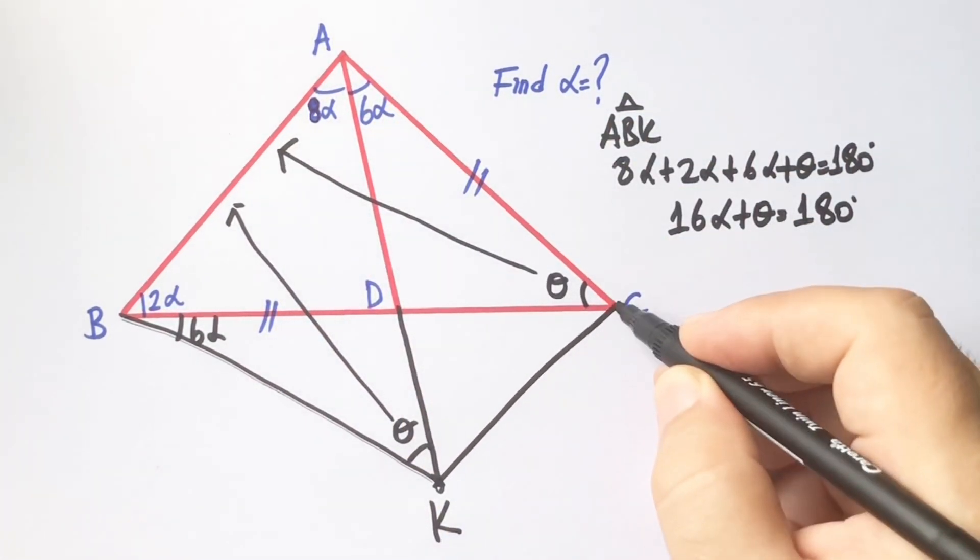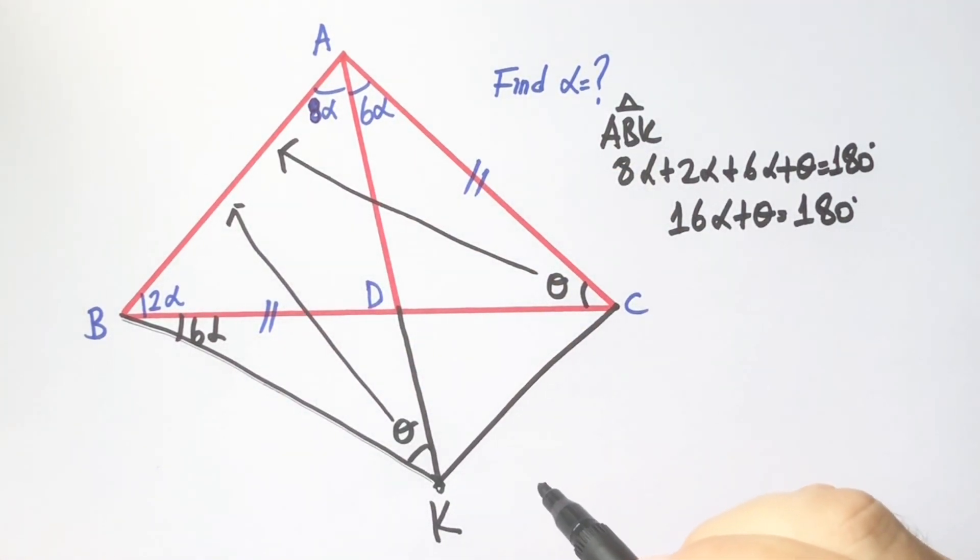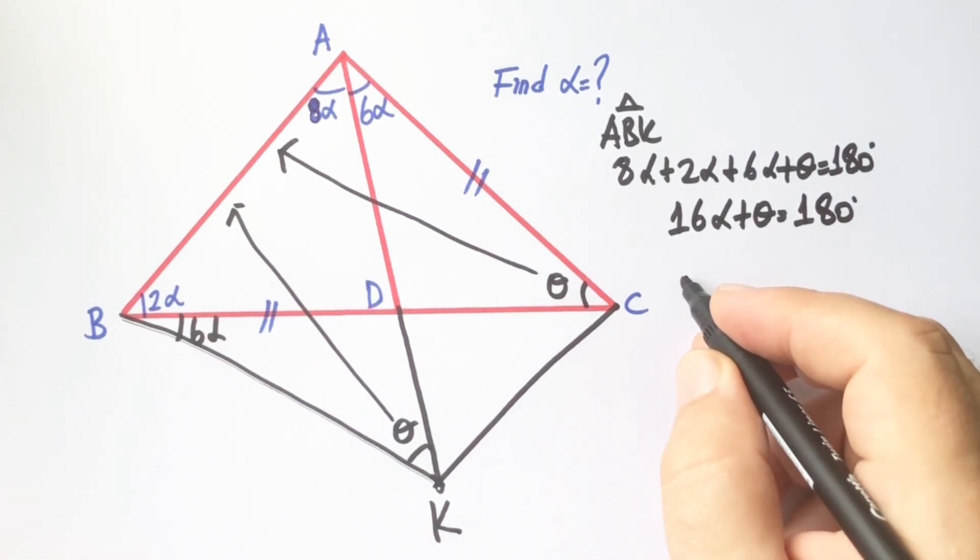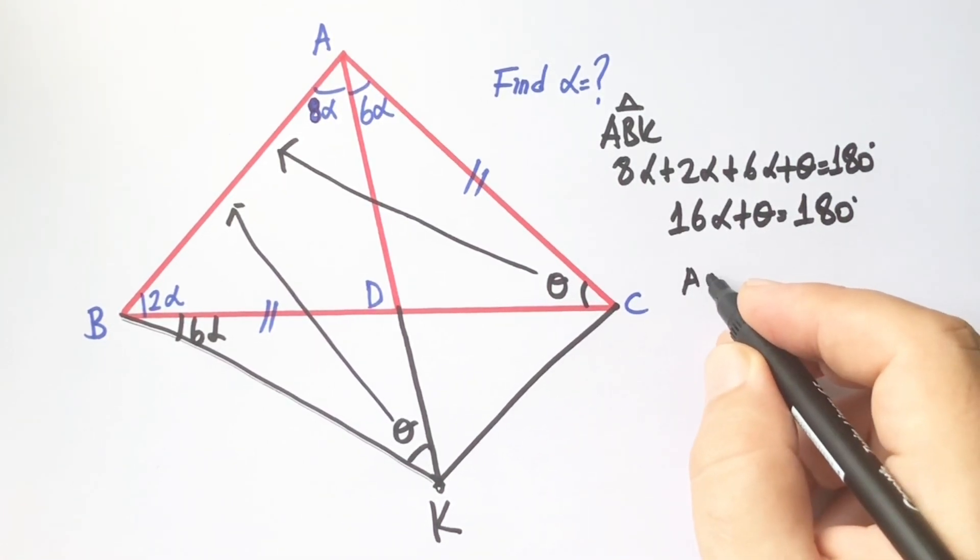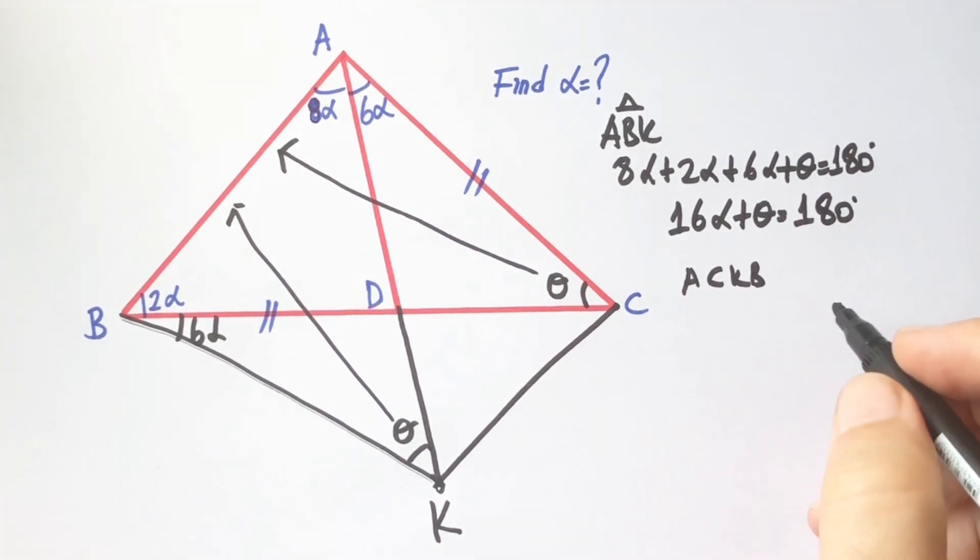So if we connect here, ABKC is a cyclic quadrilateral. ACKB is a cyclic quadrilateral.